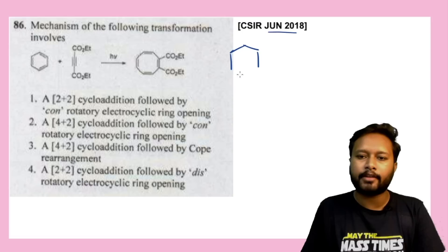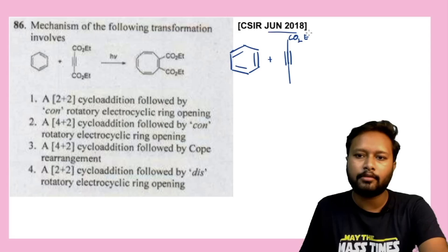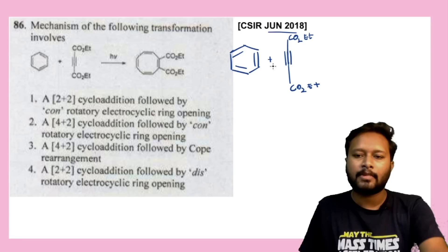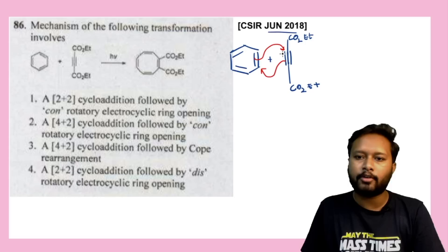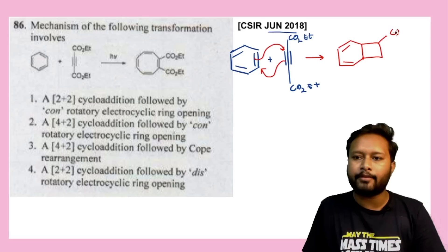The reaction proceeds with the molecule and the alkene having CO₂Et groups. This pi bond attacks here, forming a four-membered ring fused with the six-membered ring. The product has a six-membered ring fused with a four-membered ring. The two pi bonds remain as they are, the sigma bonds from the 2+2 addition, you have CO₂Et groups, and since the starting material had an alkyne, it got converted into an alkene. You can cancel out options 2 and 3, leaving options 1 and 4.